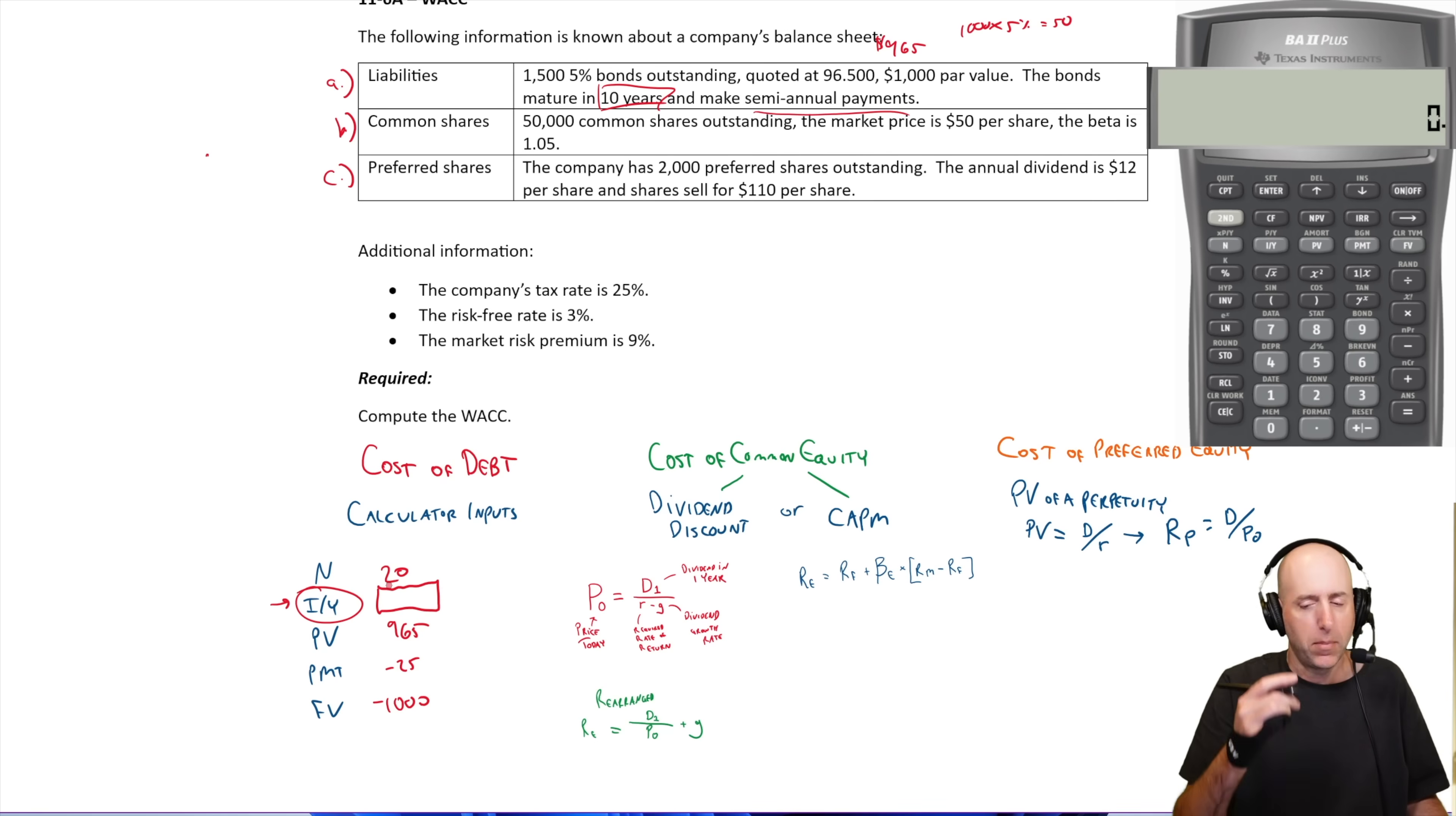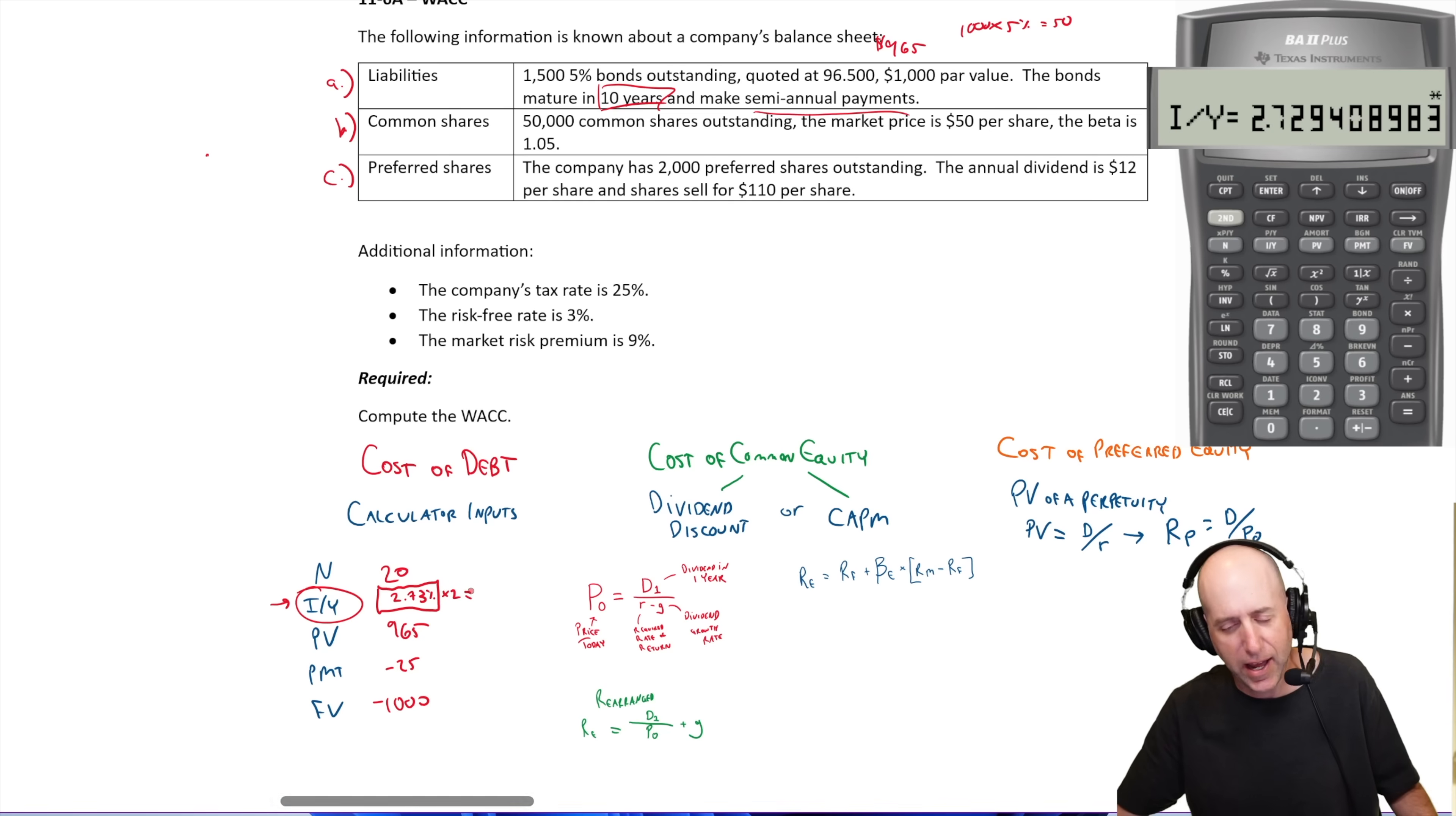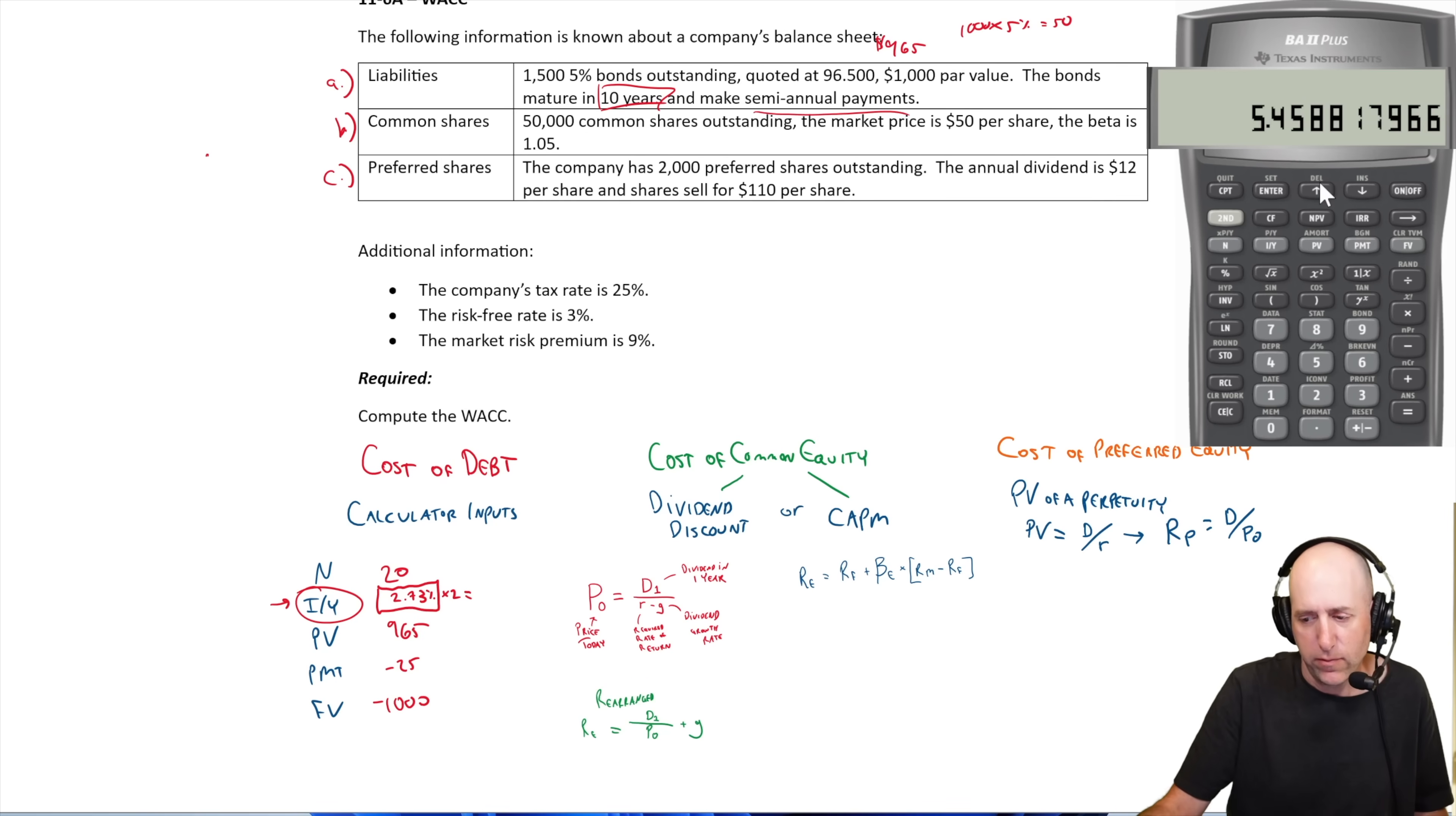So we've got all the pieces we're solving for IY. That's our missing number. That's the required rate of return or the cost of equity for a six month period. Cause we're doing everything based on six month period. So let's get it. 20 goes in as N. We don't know our IY. 965 goes in as PV. 25 negative goes in as PMT. A thousand negative goes in as FV. And the reason I put the PMT and FV in as negatives is cause we're the borrower. So we're making these payments. We're also paying back the thousand dollars at the end. So that's why those go in as negatives. And I compute the IY and I get 2.73%. But that's for six months. So let's multiply by two to get an annualized rate here. And I get 5.46%.